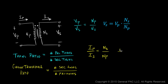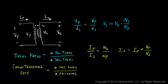If we solve for the secondary current, it equals primary current times the number of primary turns divided by the number of secondary turns. The purpose of a current transformer is to transform primary current, which is a high value, to secondary current, which is a low value, but to transform them proportionally.